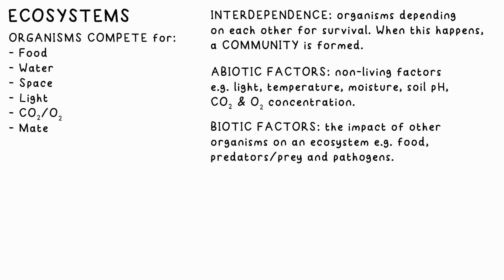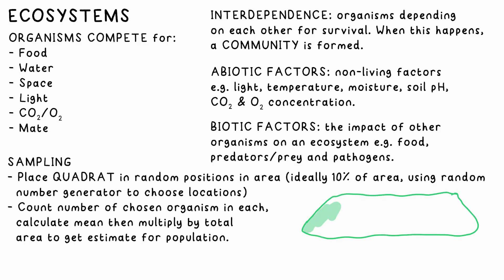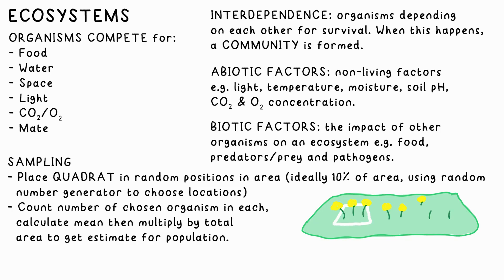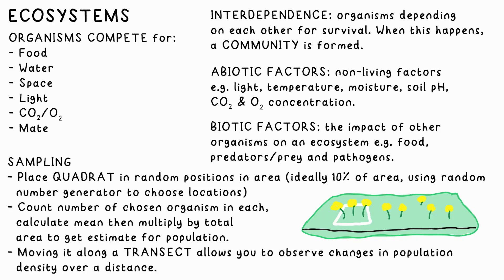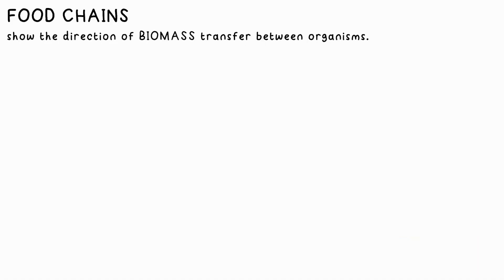We can use a quadrat to estimate the size of a population of an organism in an area by sampling, say, around 10% of the area, taking a mean, and then multiplying up for the whole area. Using a quadrat with a transect allows us to observe how population distribution or density changes over a distance.